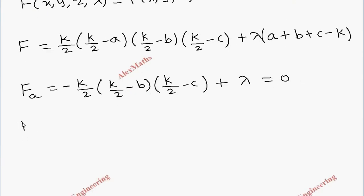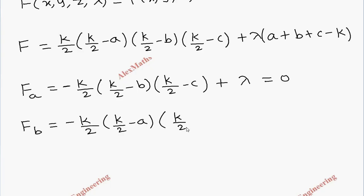Similarly, differentiating F with respect to B: K/2 minus A and K/2 minus C are constants, so the differentiation of (K/2 minus B) gives minus 1, yielding minus (K/2)(K/2 minus A)(K/2 minus C) plus lambda equals zero. The remaining constraint terms differentiate to zero.